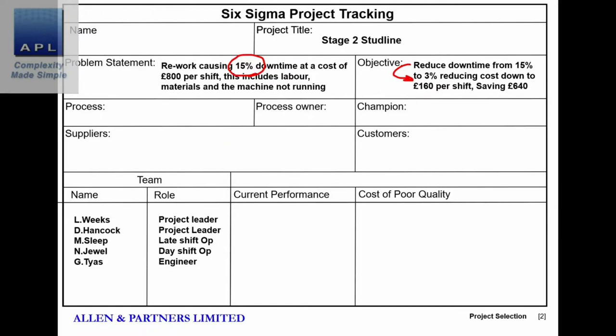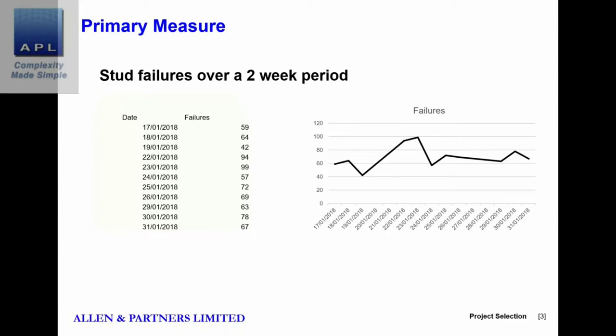Here's the current measurement data. They call these 'stud failures.' Over a period of two weeks, you can see they're pretty much hitting around 75 to 80 failures per day on this automatic welding process.